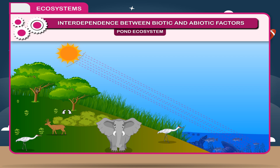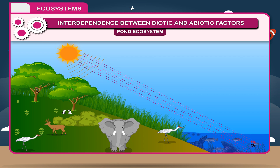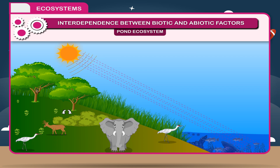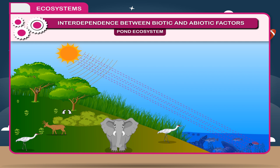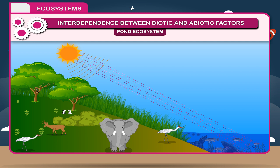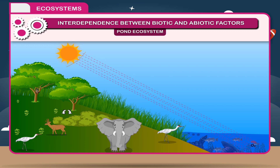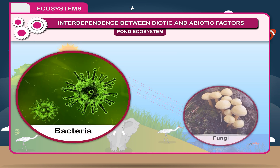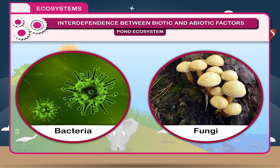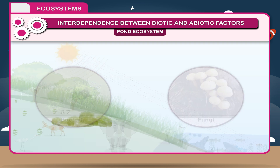These autotrophs are producers who trap sunlight and by the process of photosynthesis give out oxygen and purify the pond. These plants also host plenty of bacteria and fungi which act as decomposers.